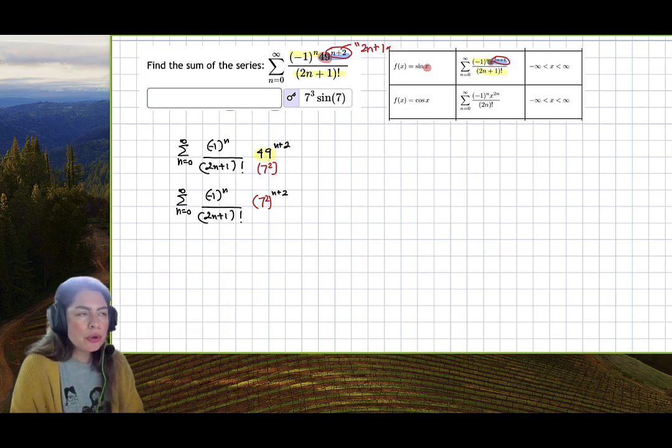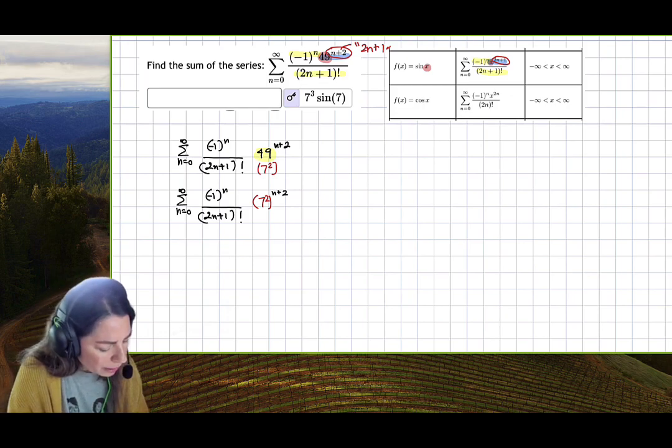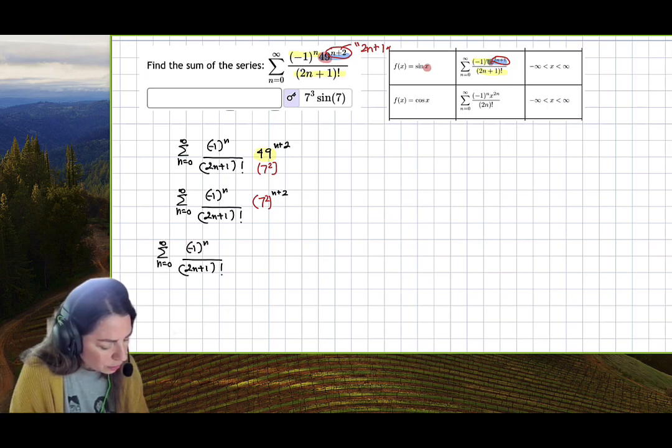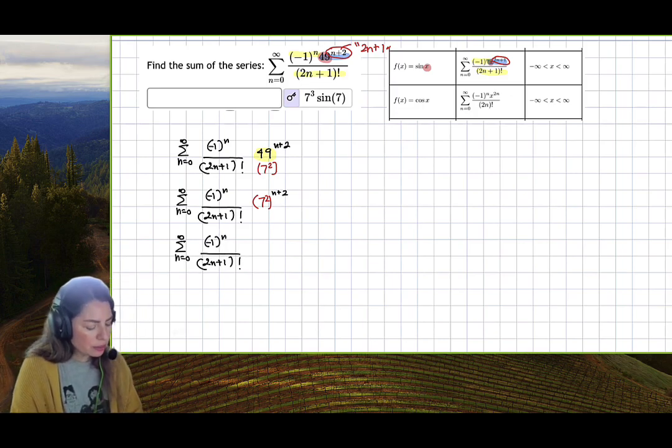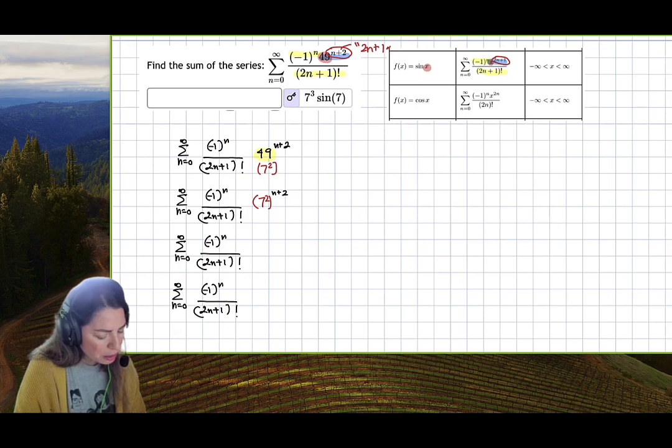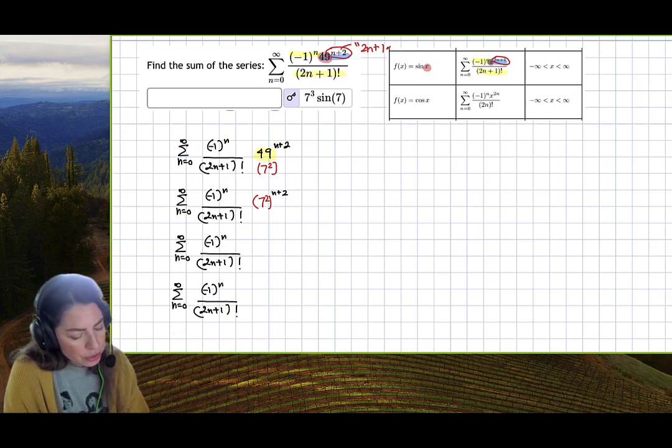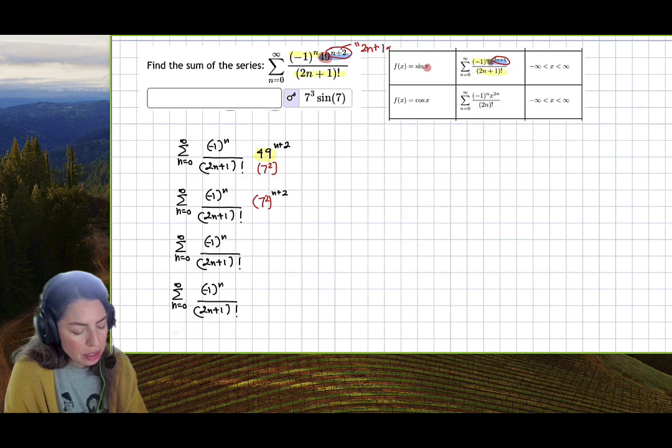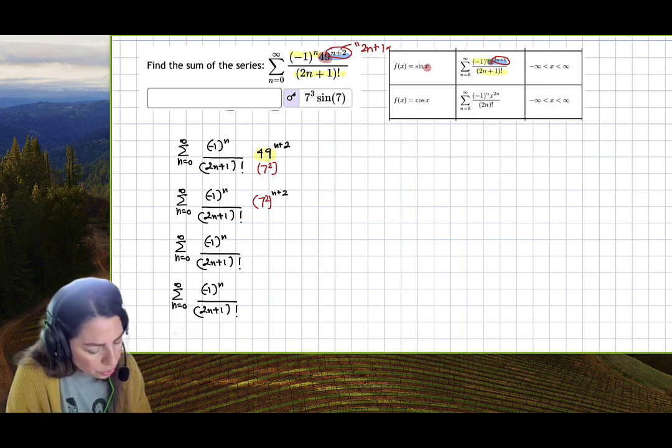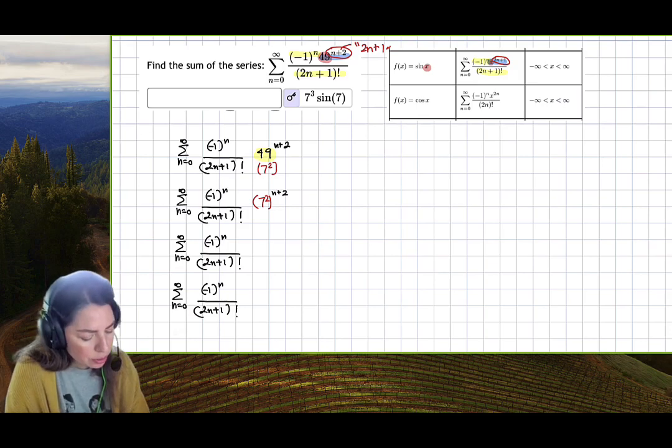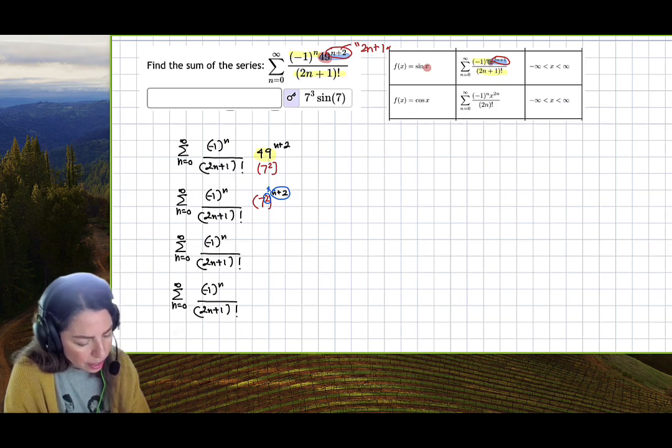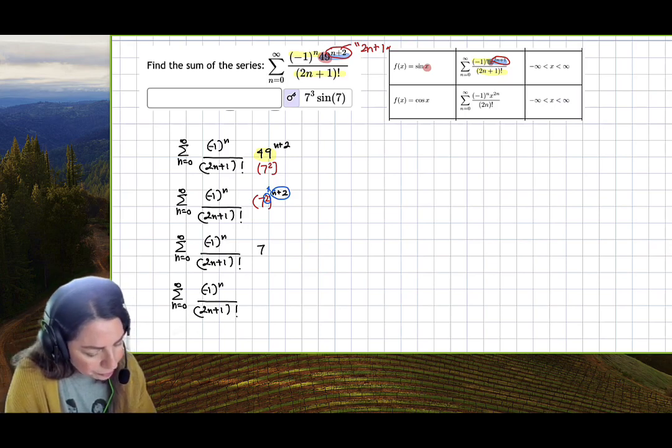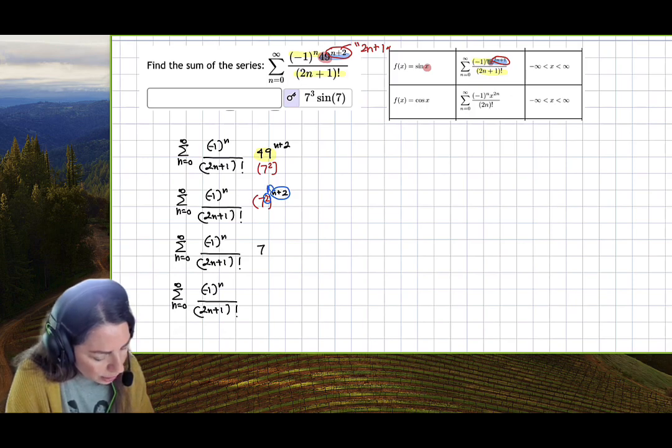Using exponent rules, I'm going to copy and paste this a couple of times. With exponent properties, a base to a power to a power means we multiply them. So we're going to get 7 to the 2n plus 4.